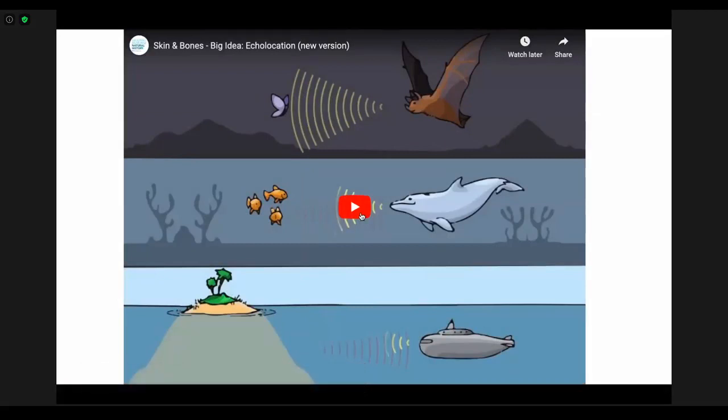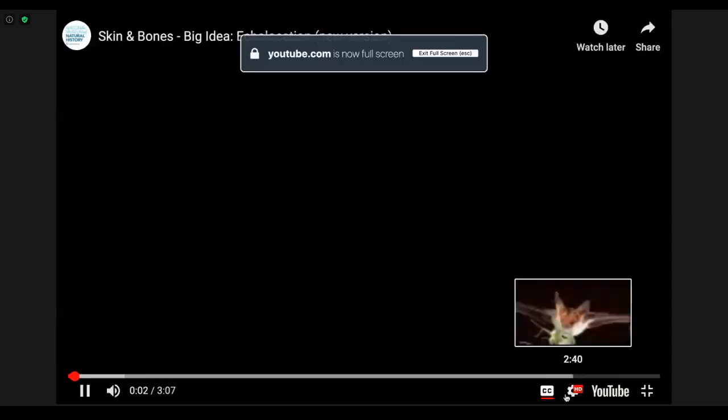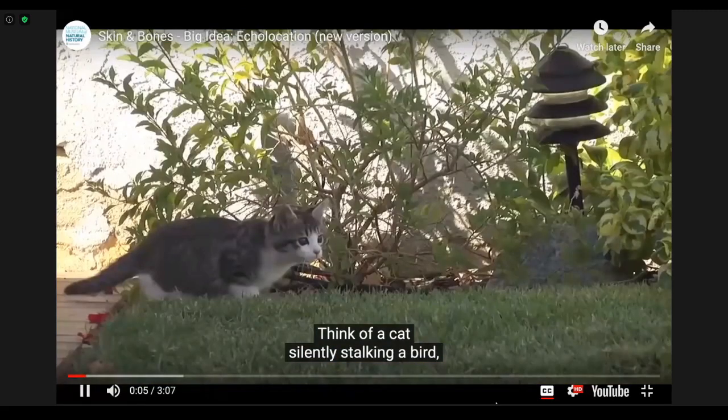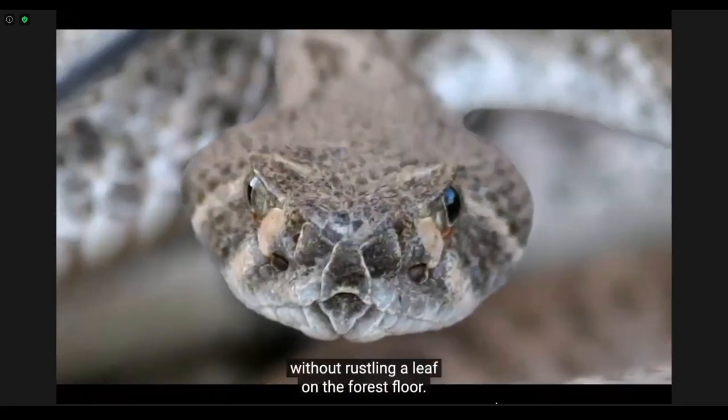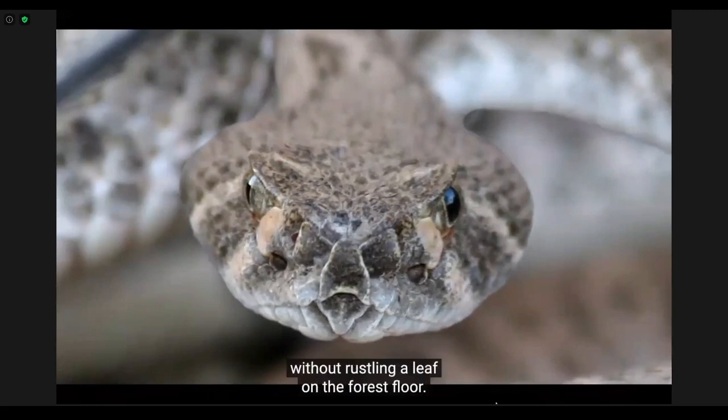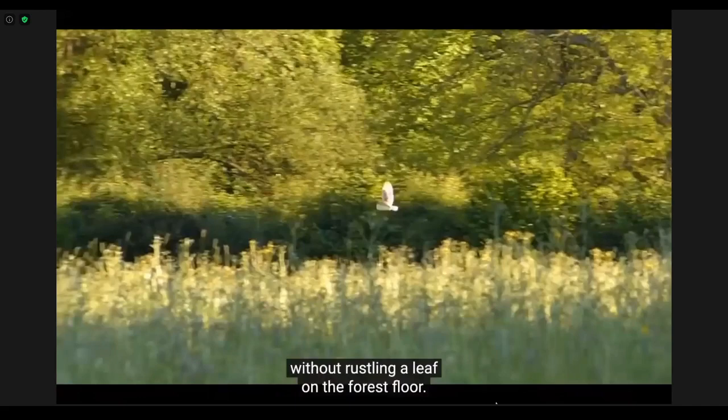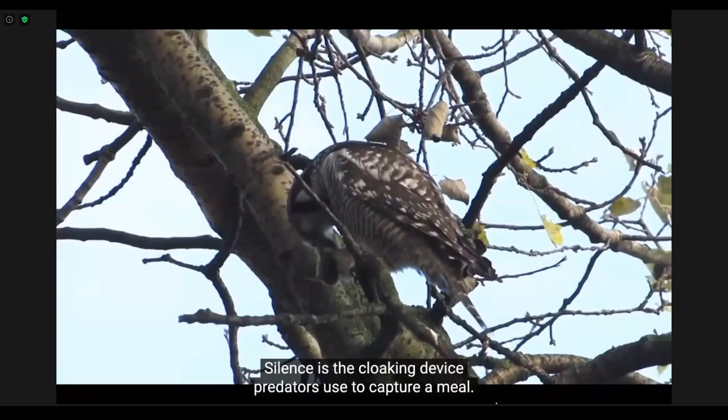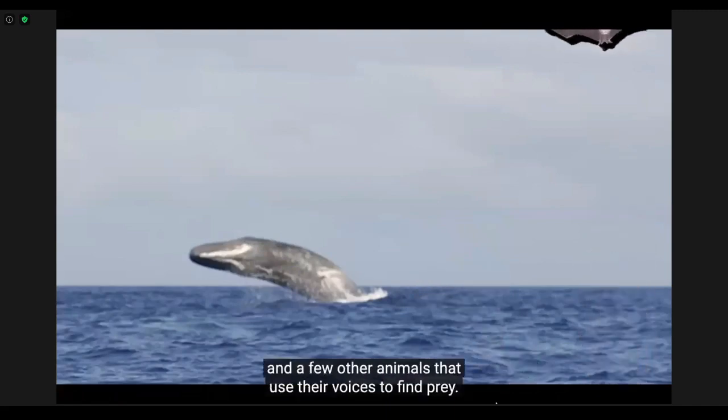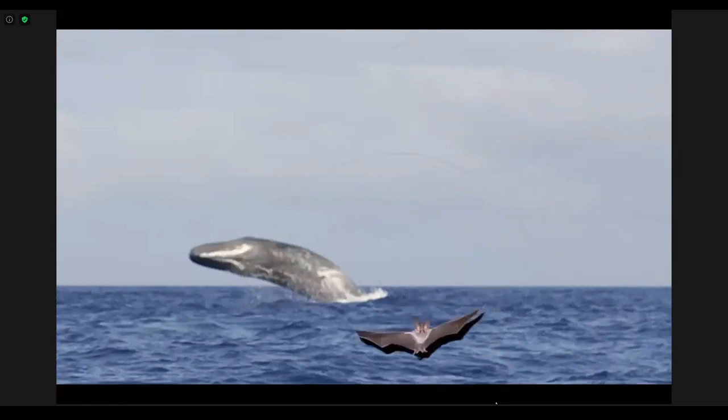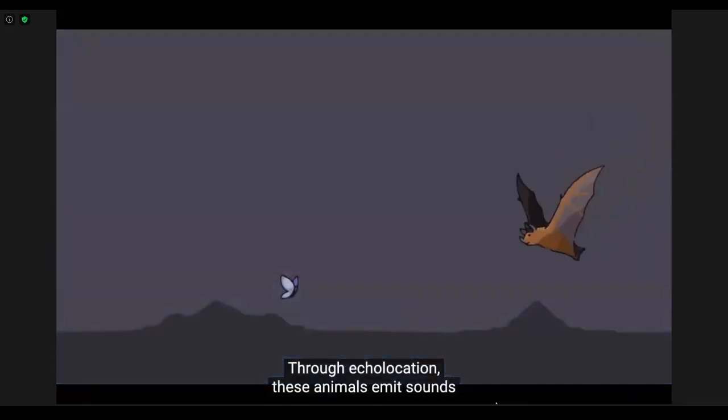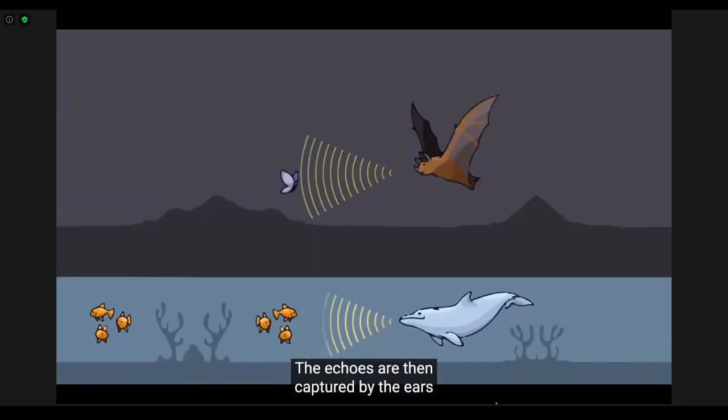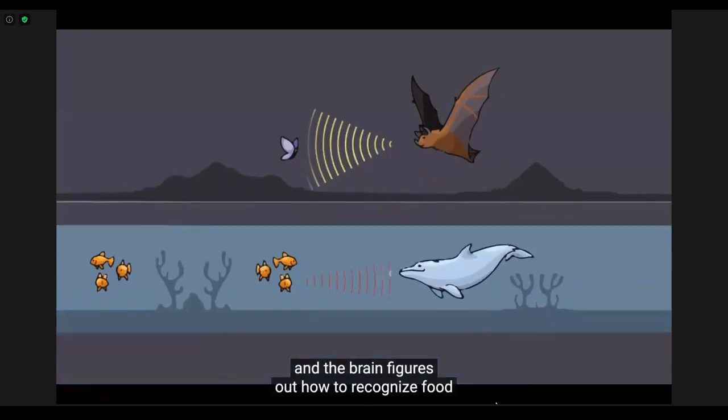Think of a cat silently stalking the bird, or a rattlesnake ready to ambush a mouse. Without rustling a leaf on the forest floor, an owl can swoop down on a mouse without making a sound. Silence is the cloaking device predators use to capture a meal. Now consider bats, whales, dolphins, porpoises, and a few other animals that use their voices to find prey. In echolocation, these animals emit sounds of different frequencies and loudness that bounce off the objects around them. The echoes are then captured by the ears and the brain figures out how to recognize food and navigate the surroundings from those signals.